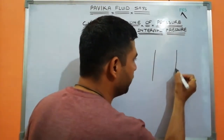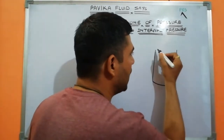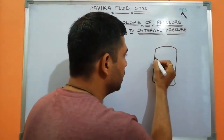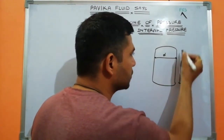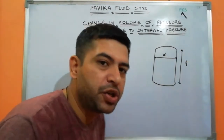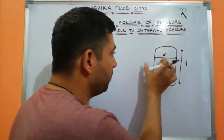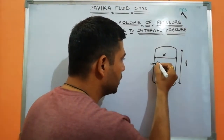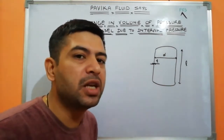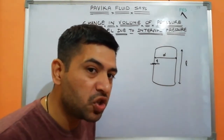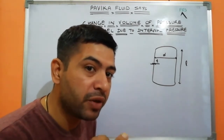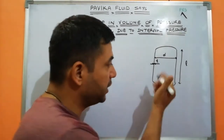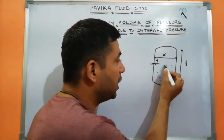First, let's understand what a pressure vessel is. This is a vessel — like the pressure cooker your mother uses. It has a diameter d, a length l, and a thickness t. Always remember: a pressure vessel has a thickness. We want to find the change in volume of a cylindrical pressure vessel when it is subjected to internal pressure — some gas inside, like in LPG cylinders at home in the kitchen.